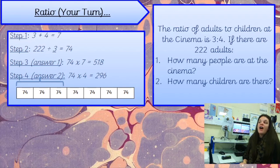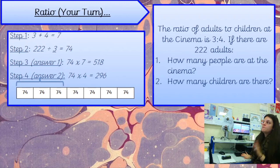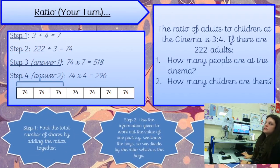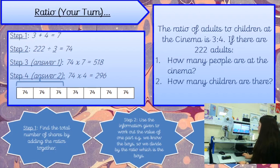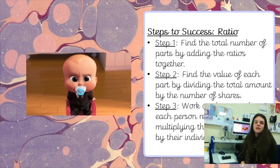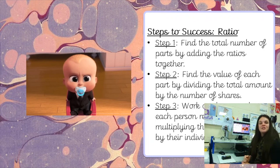Give me a thumbs up if you got 296 for the children. They did a really good job here, and I hope that was clear at home too. If you get stuck, pause it, rewind, have a look at the bar models, and work it out with an adult. To remember: step one, find the total number of shares by adding the ratios together; step two, use the information given to work out the value of each part; step three, work out the answers by multiplying one part by the relevant number of shares. Have a lovely rest of the day — miss you lots, take care.